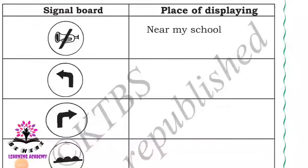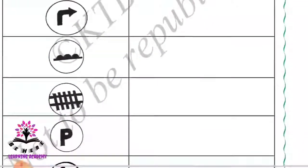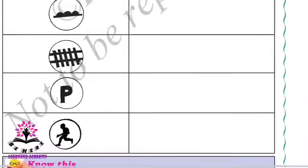Here is an activity: where can you display the following signal boards in your locality? Write it in the space given. One example has been given. First: do not horn - you can display this near the school. Second: left turn - wherever there is a road towards the left. Third: right turn - whenever there is a road towards the right side. Fourth: hump - whenever there is a hump on the road, you can display the signal board. The remaining you have to write by yourself.